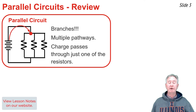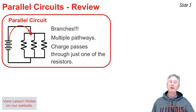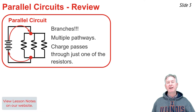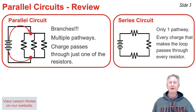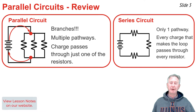Any charge that leaves the terminal of the battery will eventually come to a node, and at that node it will pick one of three pathways, go through a resistor within that branch, and return to the negative terminal of the battery. A series circuit, in contrast, has only one pathway. Any charge that leaves the terminal of the battery will pass through the first, second, and third resistor on its way back. We've already discussed series circuits, and I've left a link in the description. Our focus in this video is on parallel circuits.